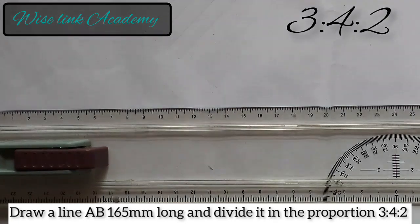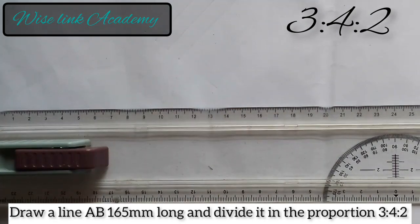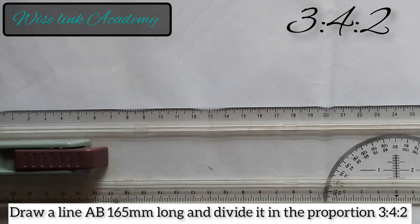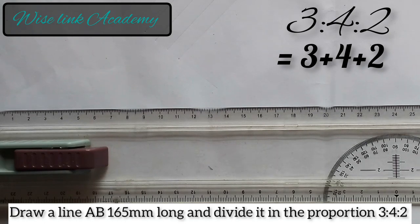As you can see, 3 ratio 4 ratio 2. My first task here is to add the ratios together. So therefore, 3 plus 4 plus 2, that becomes 9.